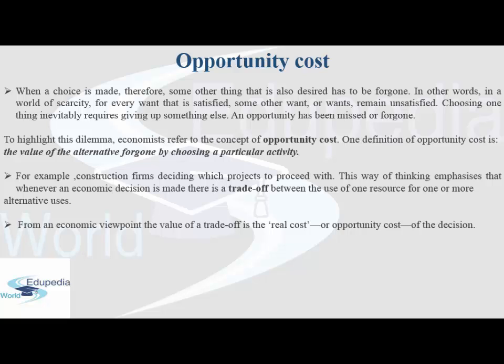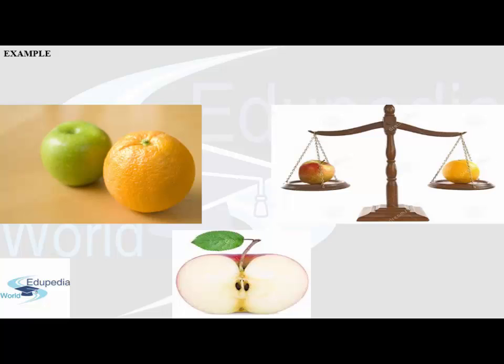For example, construction firms deciding which projects to proceed with face a trade-off between the use of one resource for one or more alternative uses. Like if we have a fixed labor force needed both for plastering work and for materials transportation, we must choose which is more necessary. If we prefer plastering, then the material shifting work that has been missed is the opportunity cost of plastering. Similarly, if you select an apple for breakfast, the orange is the opportunity cost — we have to select between these two things, and the selection of one over another is the opportunity cost.